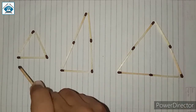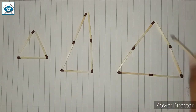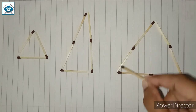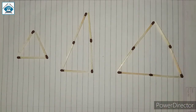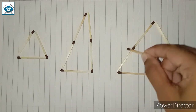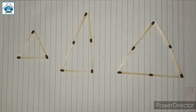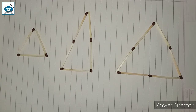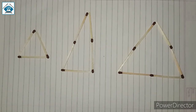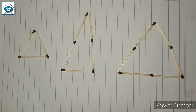The third triangle — using 6 matchsticks — is just like the first. Each side is 2 units: 1+2, 1+2, and 1+2. So this triangle has 6 matchsticks forming equal sides, making it also an equilateral triangle. The 1st and 3rd triangles — constructed with 3 matchsticks and 6 matchsticks — are equilateral triangles, and the 5-matchstick triangle is an isosceles triangle.